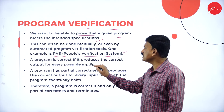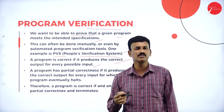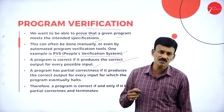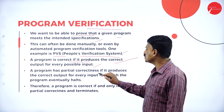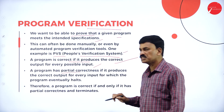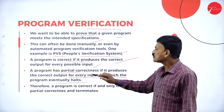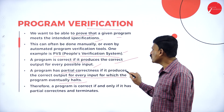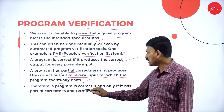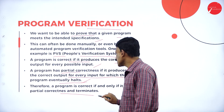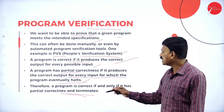A program is correct if it produces the correct output for every possible input. A program has partial correctness if it produces the correct outputs for every input for which the program eventually halts. Therefore, a program is correct if and only if it has partial correctness and terminates.